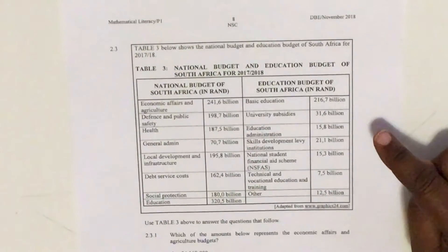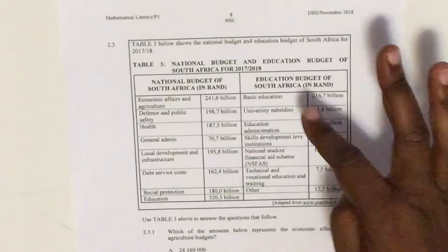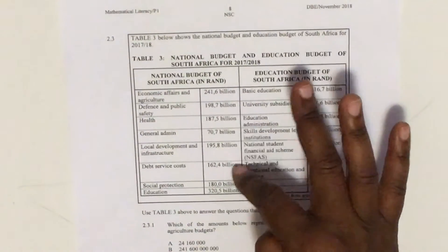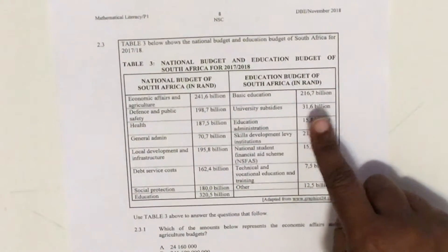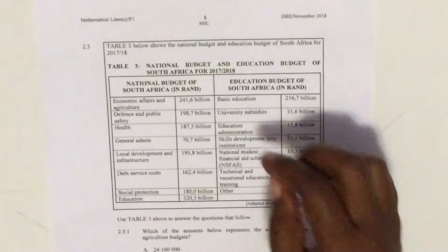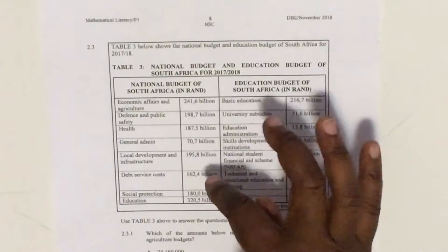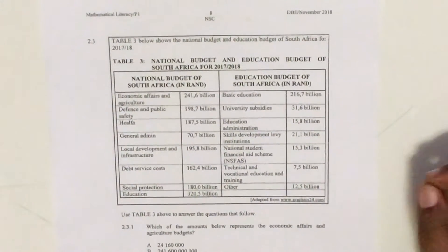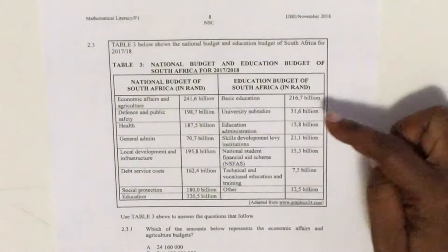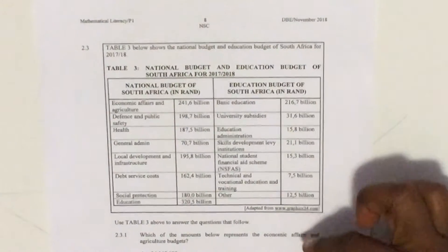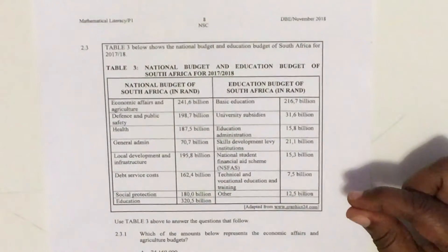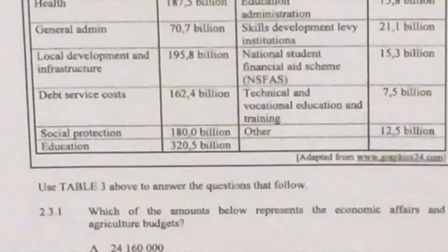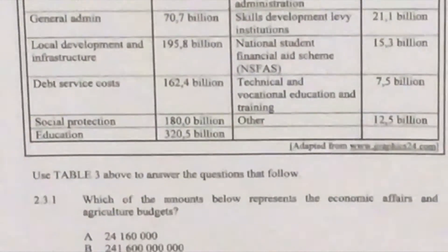It says national budget and educational budget. When you look at these two columns, this side is the national budget of South Africa in rands, and this side is the educational budget of South Africa in rands. This is how the country has budgeted for each department — health, economic affairs — and this whole section is the money that is divided to education.